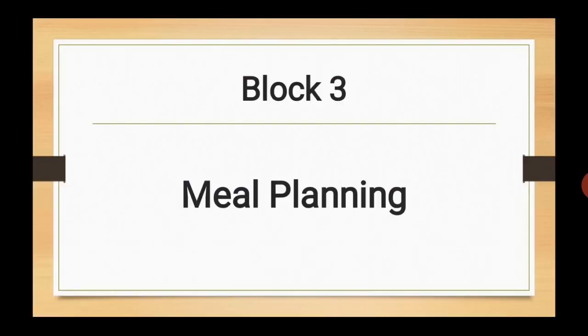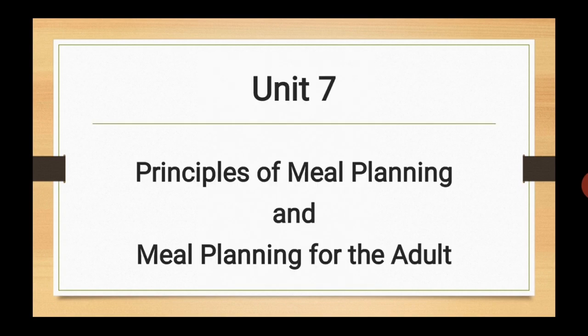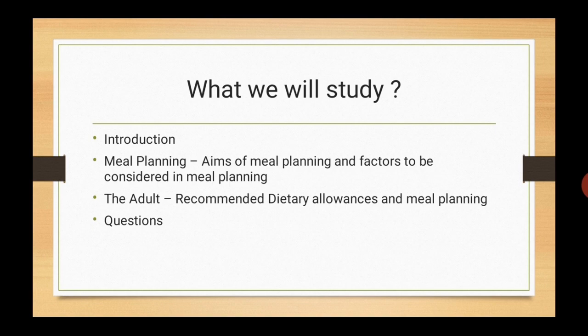In this block, we will study how to plan a meal for different age groups like infant, adult, adolescents, pregnant and lactating women, preschooler and school child. This is the book — it consists of 4 units. Let's start with Unit 7, Principles of Meal Planning and Meal Planning for the Adult. Topics of this unit are Introduction, Meal Planning, aims of meal planning, factors to be considered in meal planning, RDAs for adults, meal planning for adults, and at last, questions from this unit.